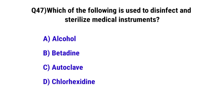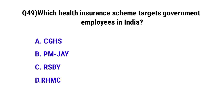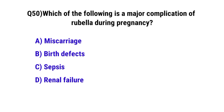Question No. 48: Which mission is focused on health care for rural India? The correct option is A: NRHM. Question No. 49: Which health insurance scheme targets the poor? The correct option is C: CGHS.